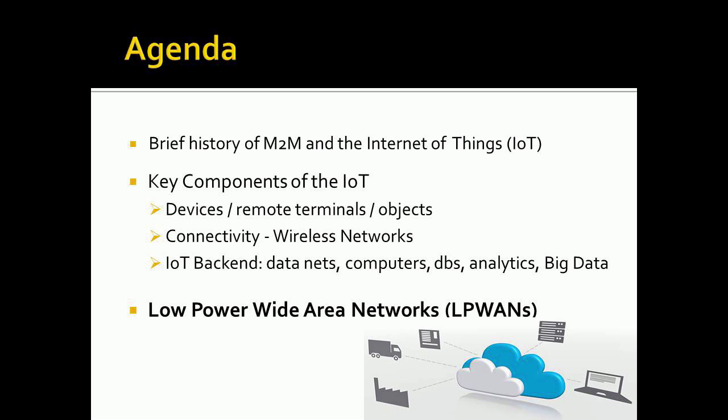I'm going to give a quick history of machine-to-machine and how that's evolved into the Internet of Things, and I'll talk about the three components I break it down into: devices, remote objects, remote terminals, end nodes — whatever you want to call them. Then the connectivity part, which can be wireline but usually wireless networks connecting these devices to the back end. And the back end will be the business processes, computer systems, the cloud, databases, analytics, and big data that will be analyzing and responding to this information. Then I'll focus mostly on the low-power WANs in my presentation.